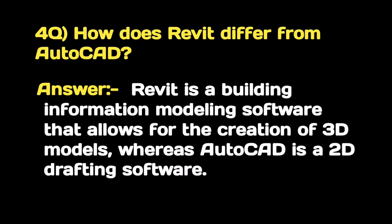How does Revit differ from AutoCAD? Revit is a building information modeling software that allows for the creation of 3D models, whereas AutoCAD is a 2D drafting software.